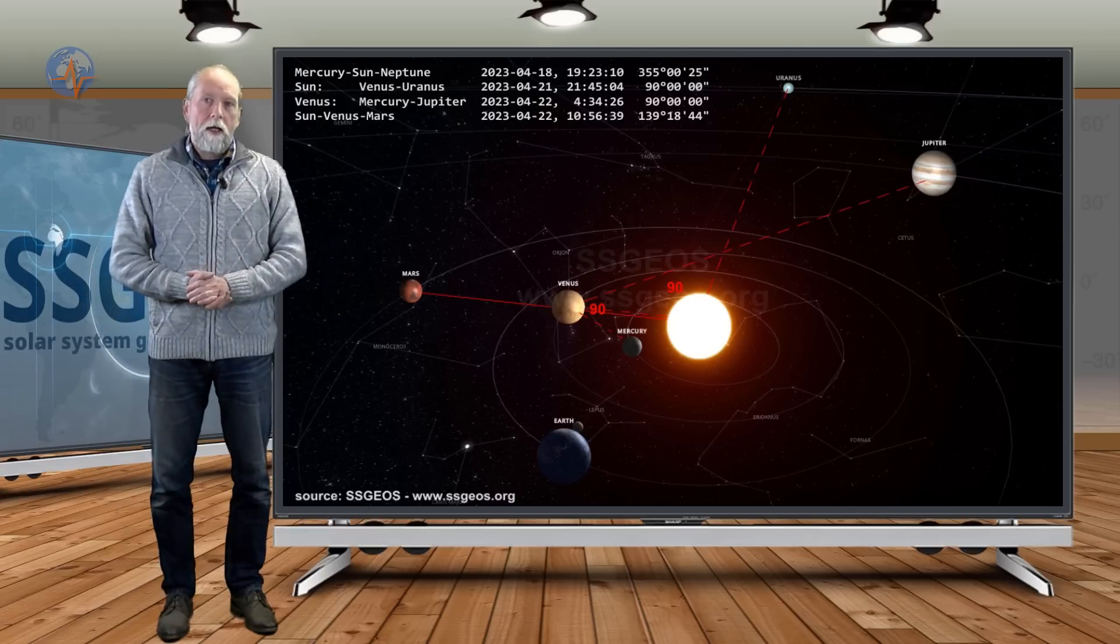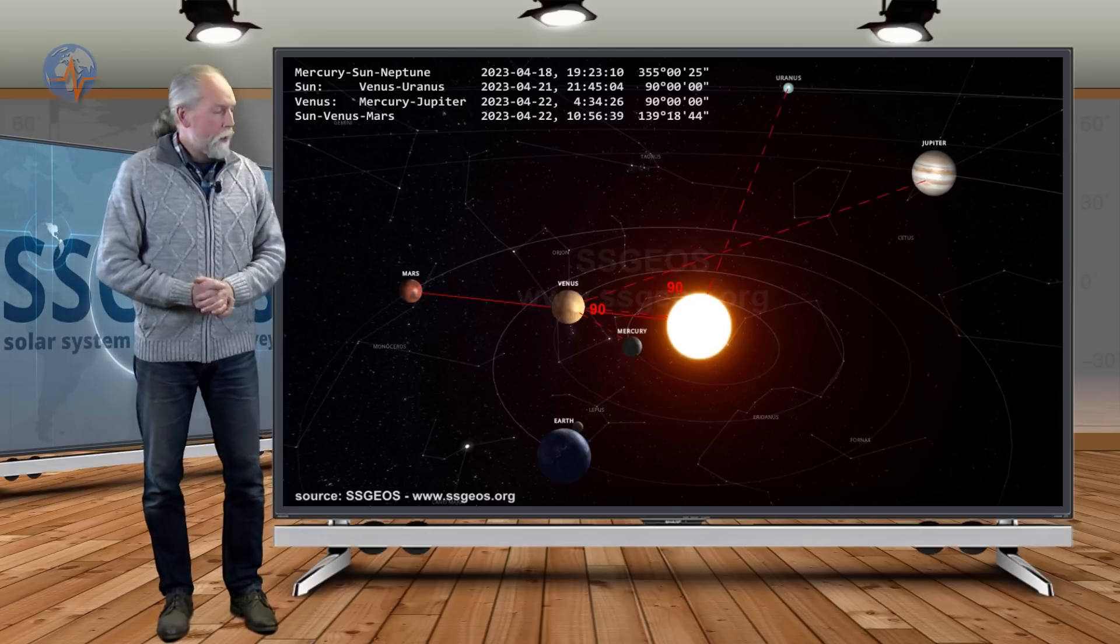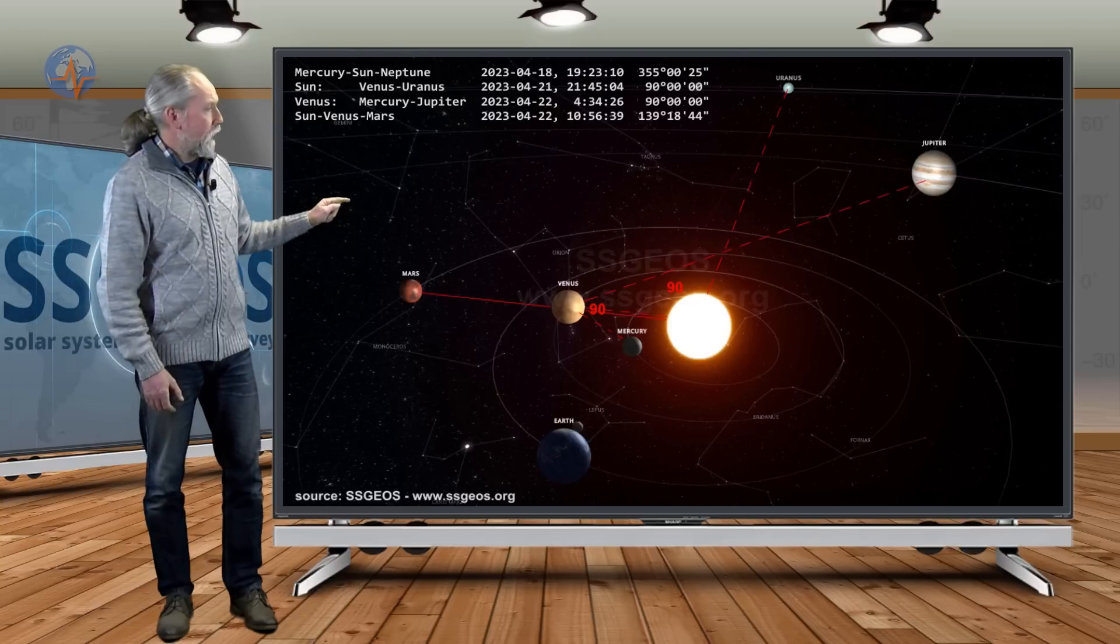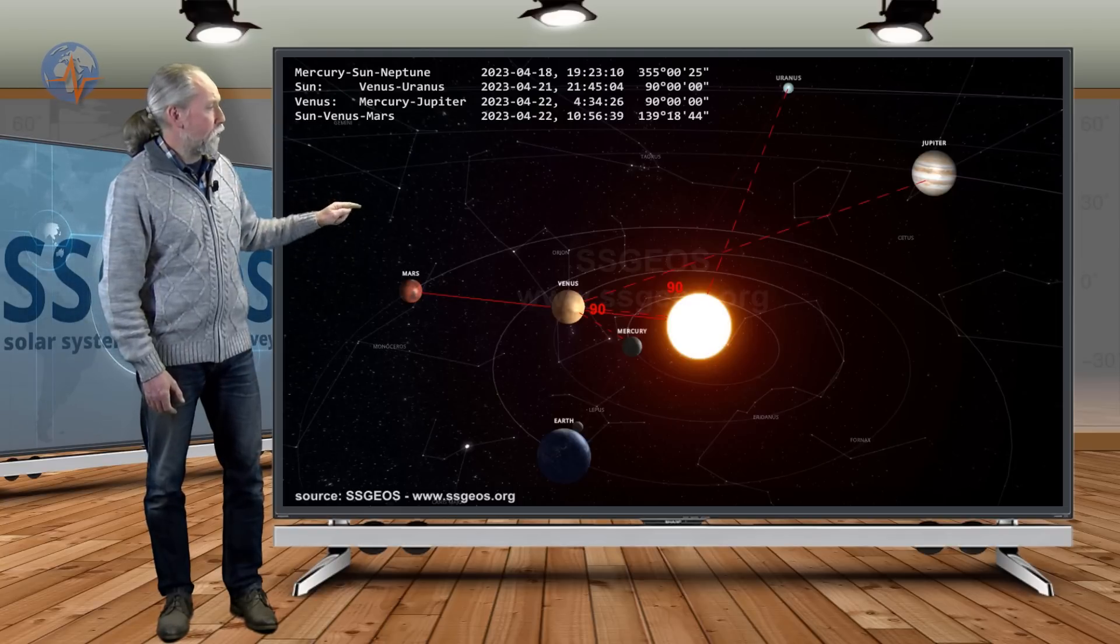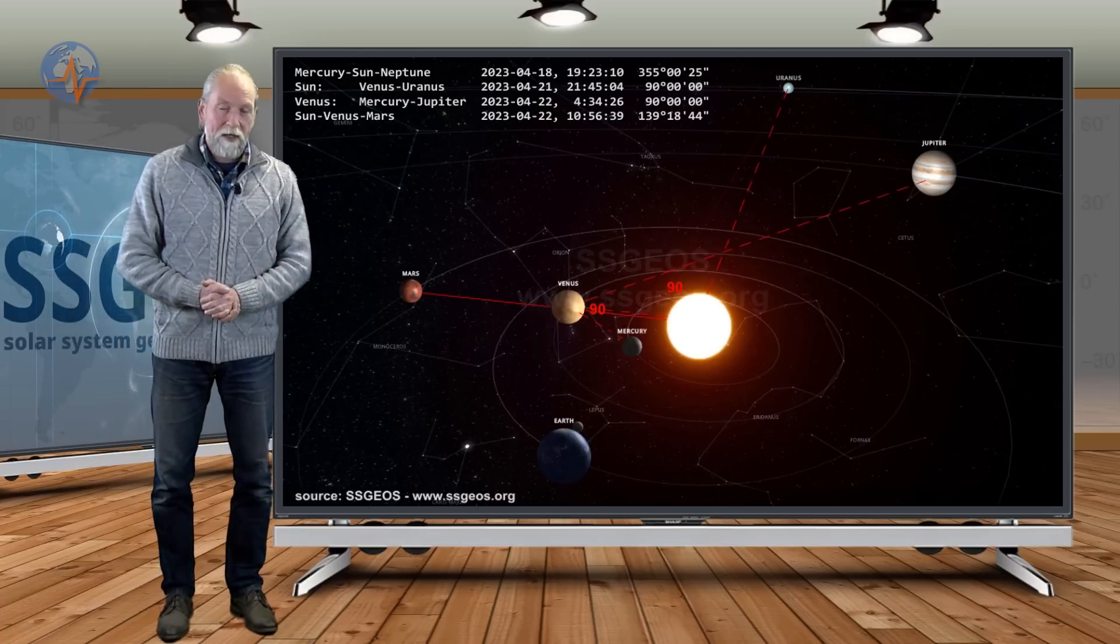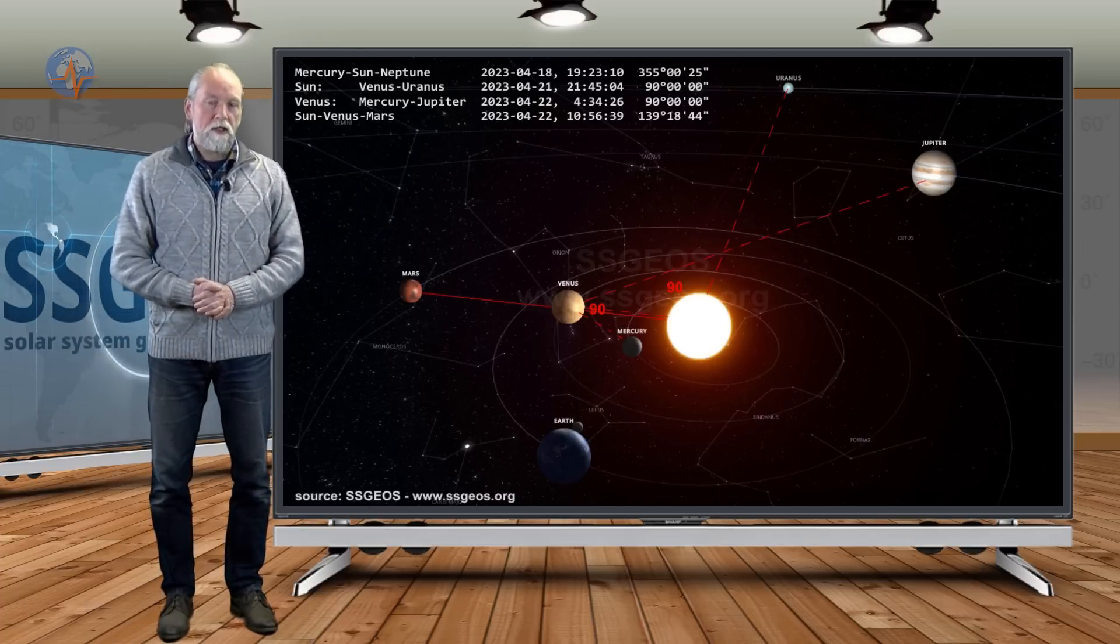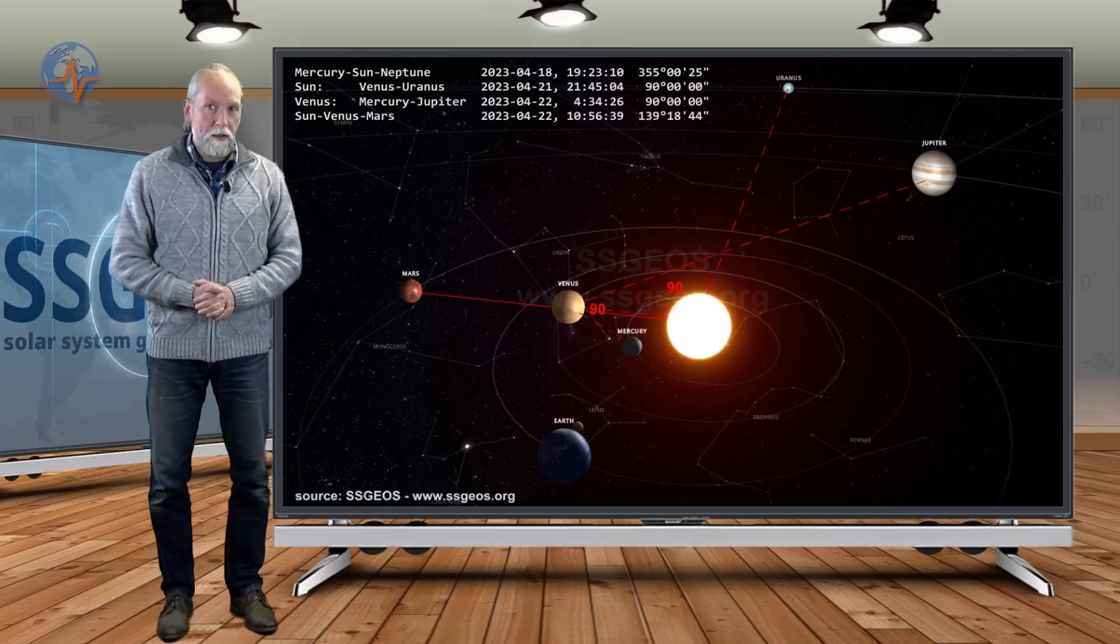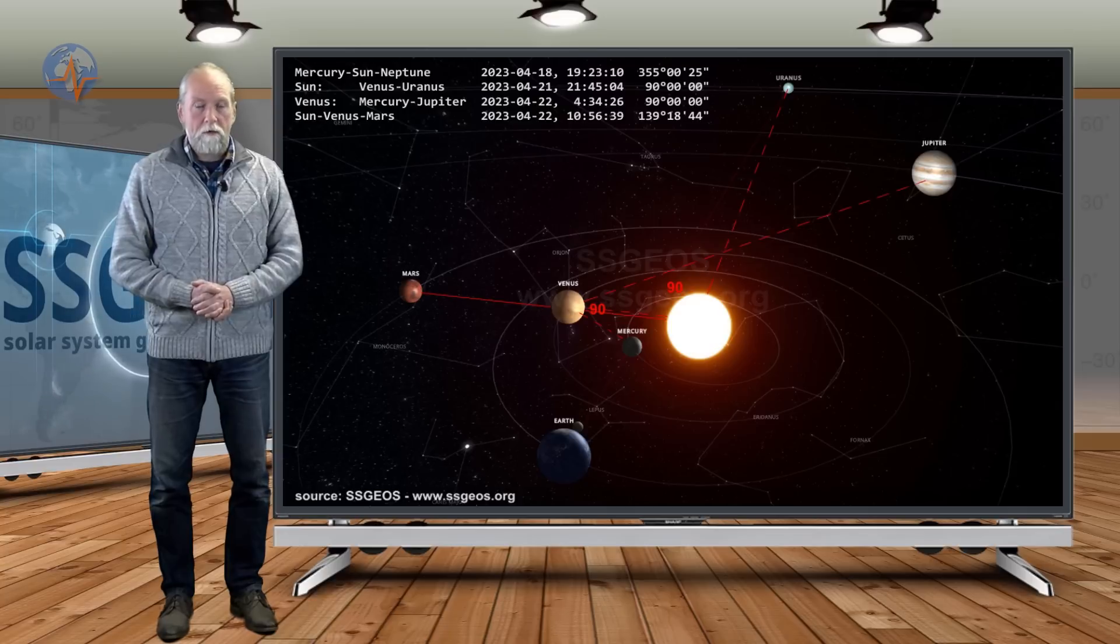That is a Venus centric alignment. And then several hours later we have at 1056 UTC tomorrow morning Sun Venus Mars in a conjunction. That is a critical one. When Venus is in a conjunction with an outer planet we can have a major seismic event around the time or just following that conjunction.